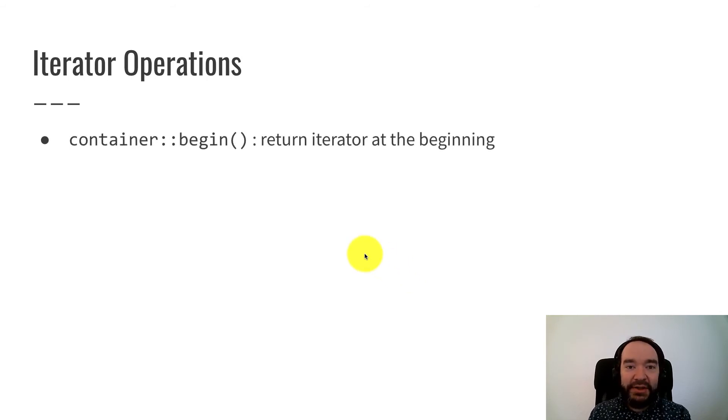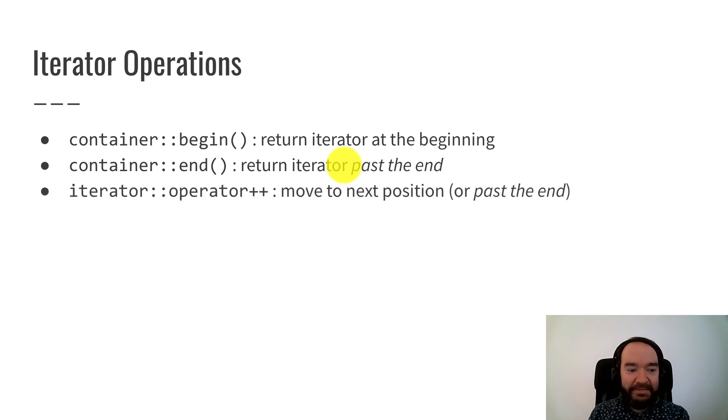Here are the operations we use to manipulate iterators. So the container data type, like array, vector, forward list, has a begin function. This is how you will typically create an iterator. And it returns an iterator at the beginning, the first valid location. The container data type has an end function. This returns an iterator that's past the end. So that's not a valid location, it's past the last valid location. And that's so that we can write a for loop that looks conventional. Then there's a different iterator data type, and it has an increment operator, plus-plus. That moves to the next position. And if we're at the last valid position, plus-plus moves us past the end.